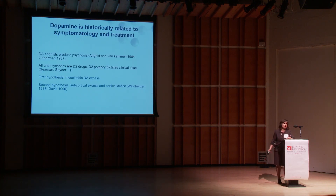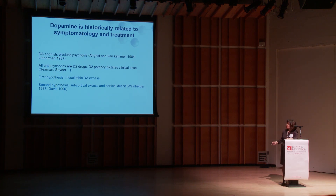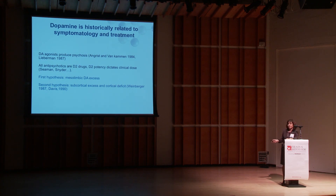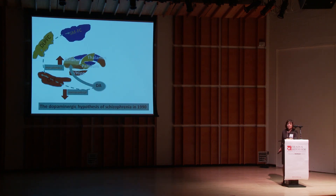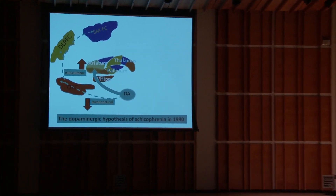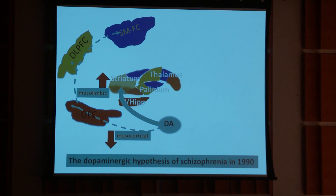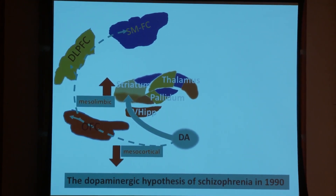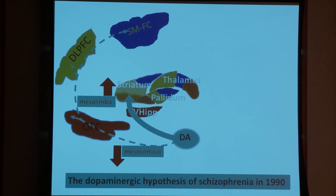We also know that all drugs we have in schizophrenia are D2 blockers or functional antagonists, and that if patients take dopamine agonists their psychosis gets worse. So when I started my career, the view of the field was that the mesocortical pathway must be deficient — explaining cognitive abnormalities and negative symptoms — and that the mesolimbic pathway is overactive, explaining the psychosis.